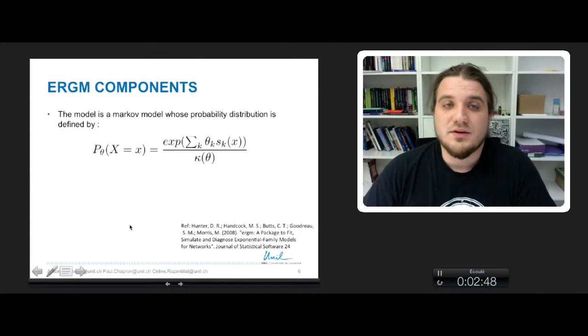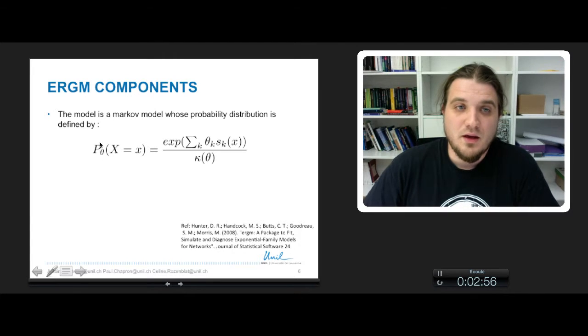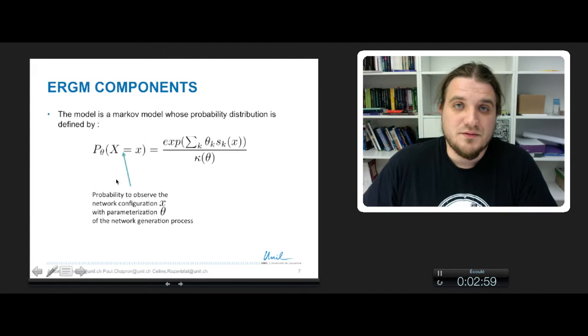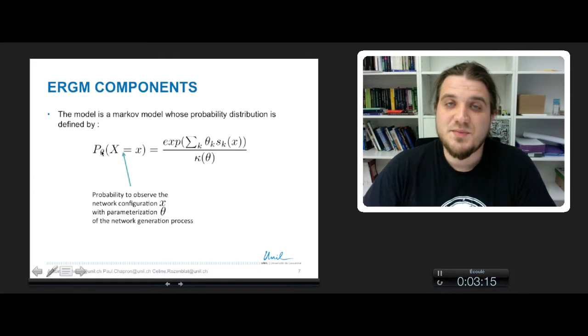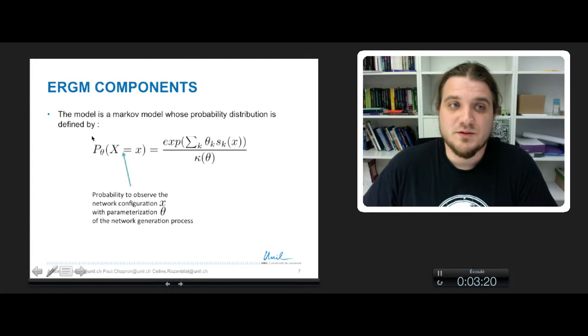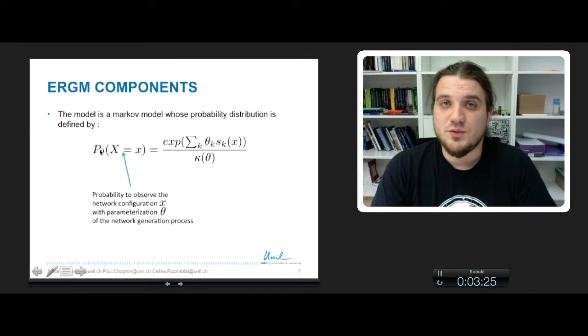So an ERGM is a Markov model whose probability distribution is defined by this expression. So the left side of this equation is simply the probability to observe the network configuration, small x here, with a parametrization of theta. Theta is a vector of some different parameter values. And these parameters are the parameters of the network generation process. So this is the probability to observe the network that we have and that we want to analyze.